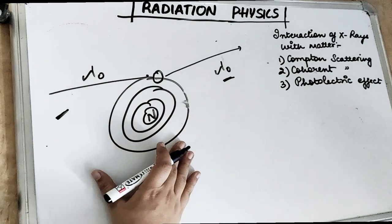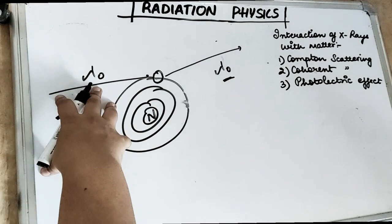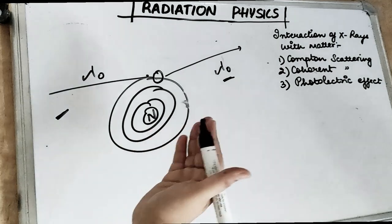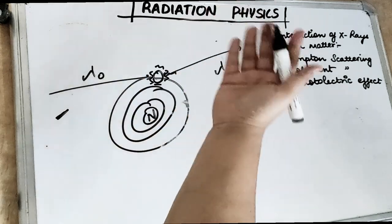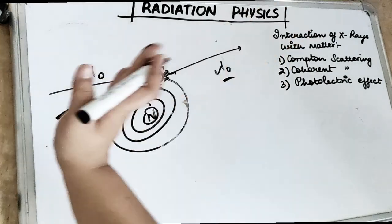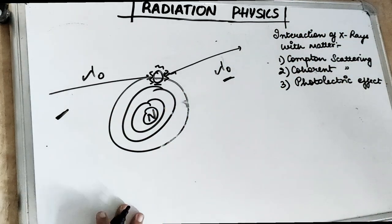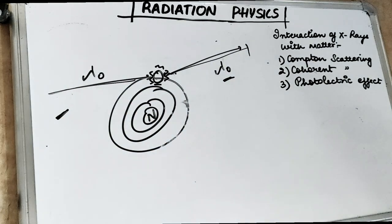In coherent scattering, a low energy incident photon strikes the outer shell electron and causes the electron to vibrate slightly. The electron does not go out of its orbit — it just vibrates. After the interaction, a scattered photon with the same energy is emitted, but the path is changed. Only the angle is changed in coherent scattering — everything else remains the same.